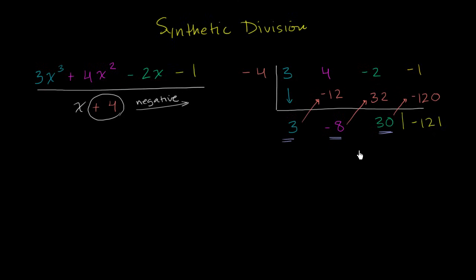So this is going to be equal to 3x squared, 3x squared minus 8x, minus 8x plus 30, plus 30. And this right over here, you can view as the remainder. So minus 121 over the x plus 4. This didn't divide perfectly. So over the x plus 4.